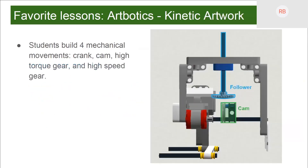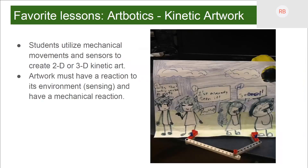Going off of this, after the drawings we move into kinetic artwork. Students first learn four mechanical movements: the crank, the cam, the high torque gear, and the high speed gear. This gets deep into STEM and includes a lot of physics. Students build all four mechanical movements before deciding which to use in a kinetic artworks project. They can build 2D or 3D kinetic artwork systems — one example based on last year's eclipse used a crank to have the moon wave in front of the sun to simulate an eclipse, programmed reactionary to its environment using an ultrasonic sensor, so whenever you came close it started running the program, making noise and running the crank motor.